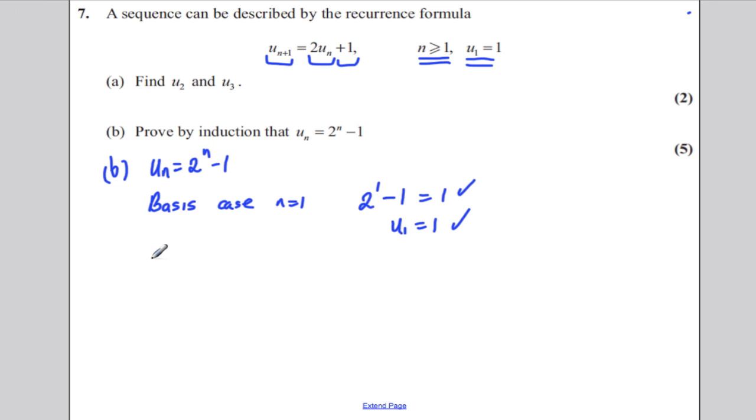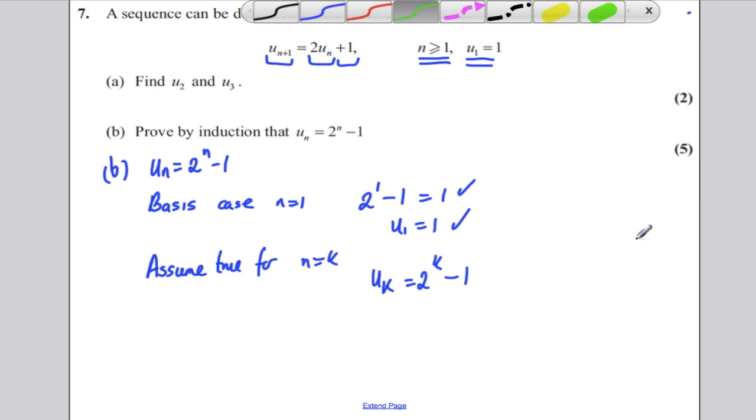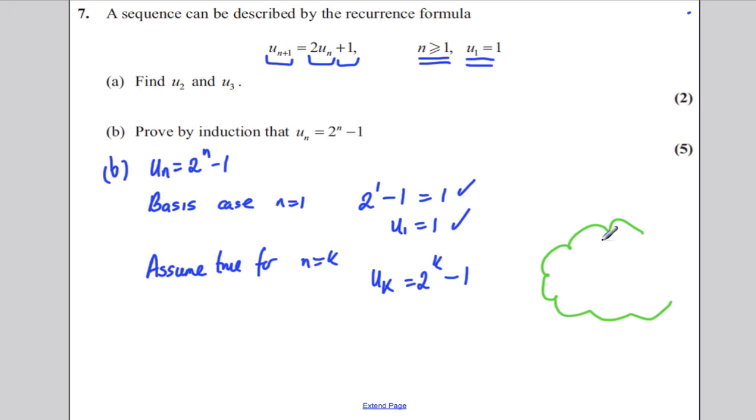Therefore, the assumption you assume true for n is k, i.e., and you write down what that means, Uk must be 2^k subtract one. And let's just write down what in an ideal world we're trying to get. This is our aim. This is not part of our proof. Our aim is to show that U(k+1) is equal to 2^(k+1) subtract one.